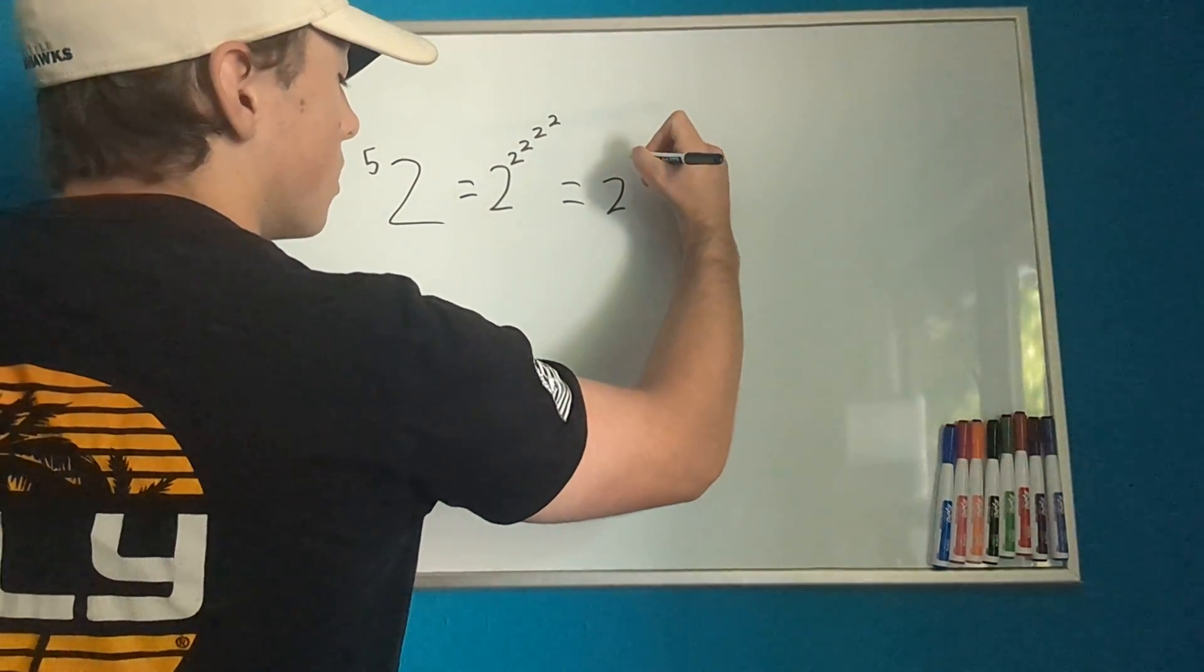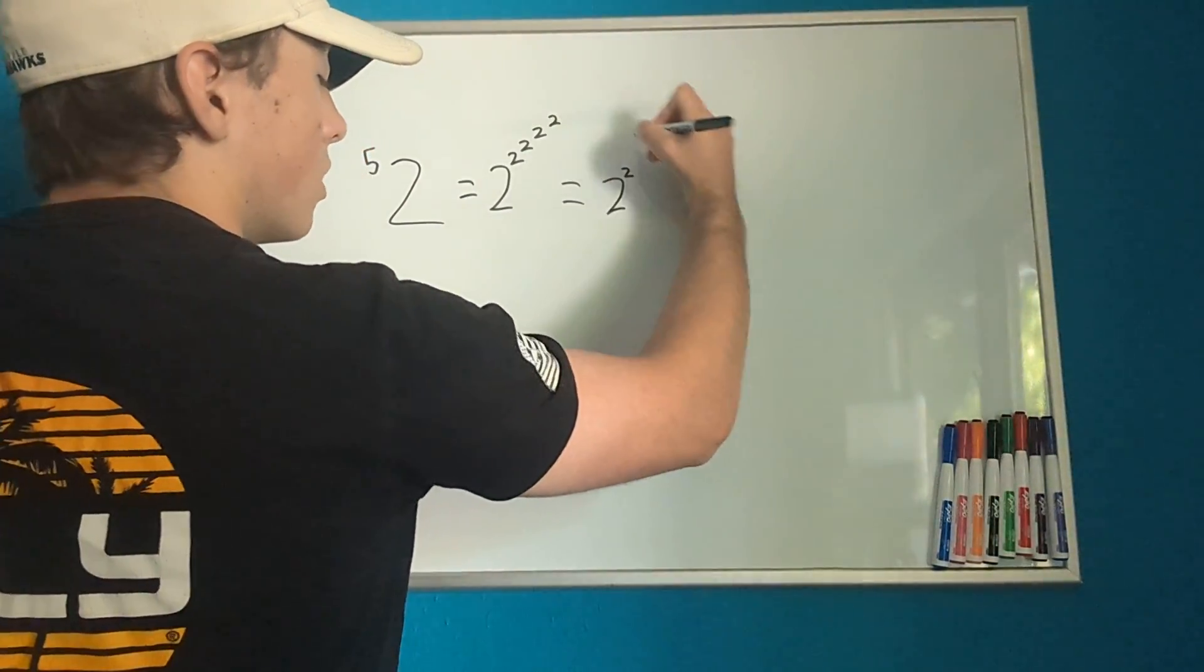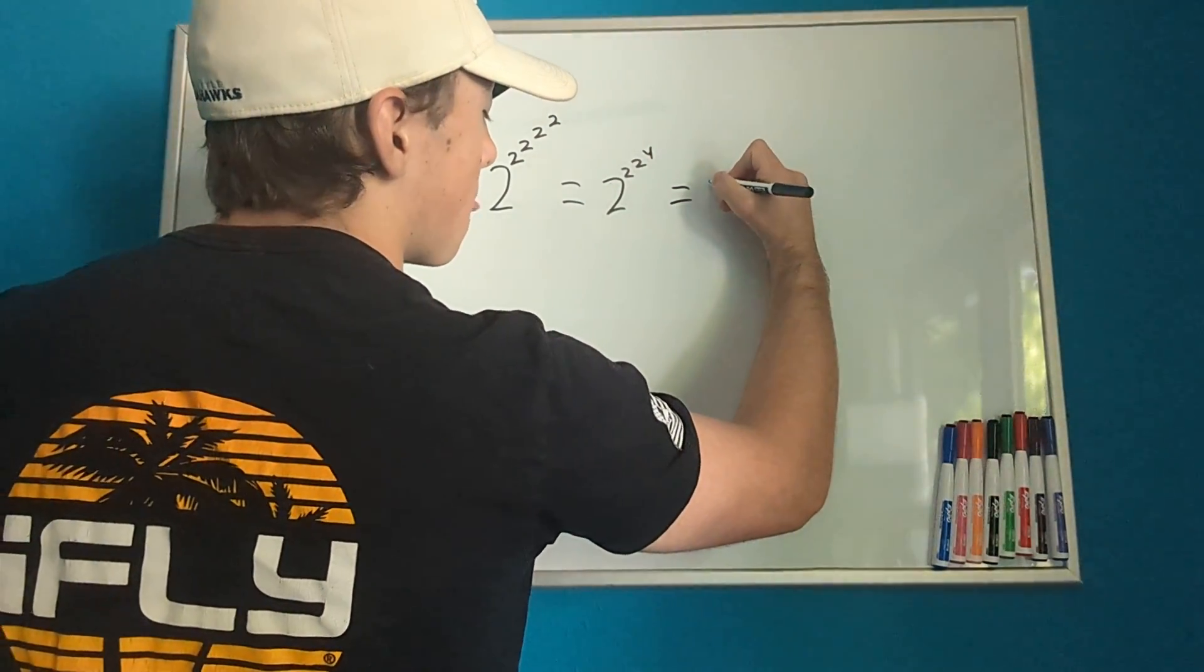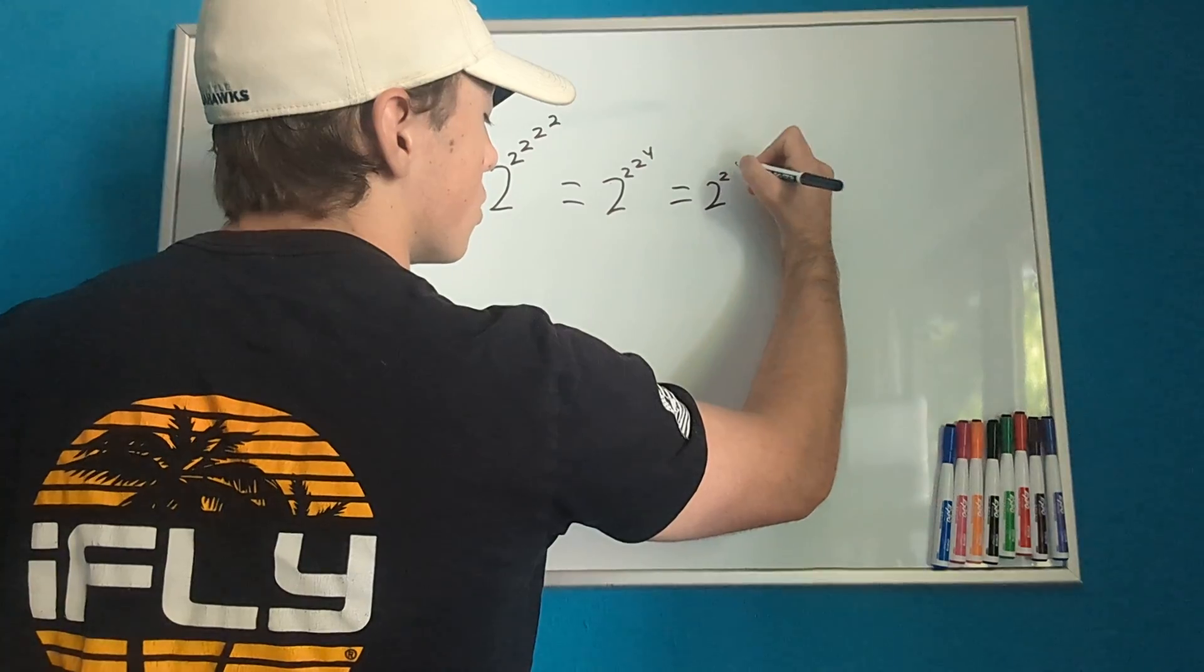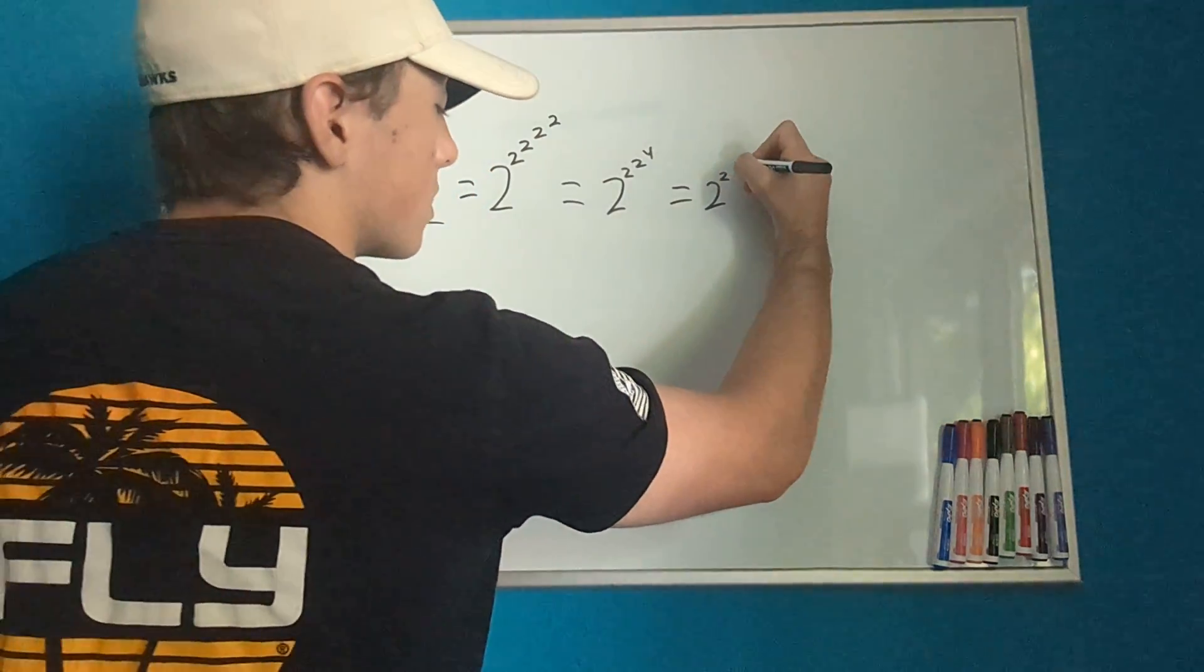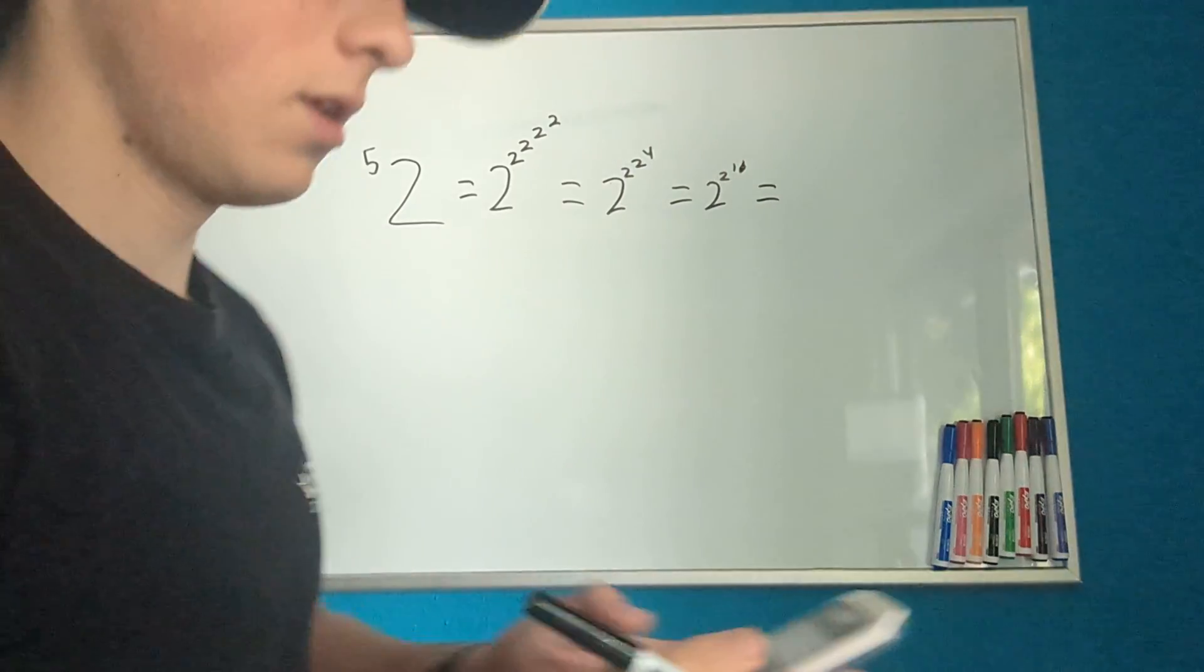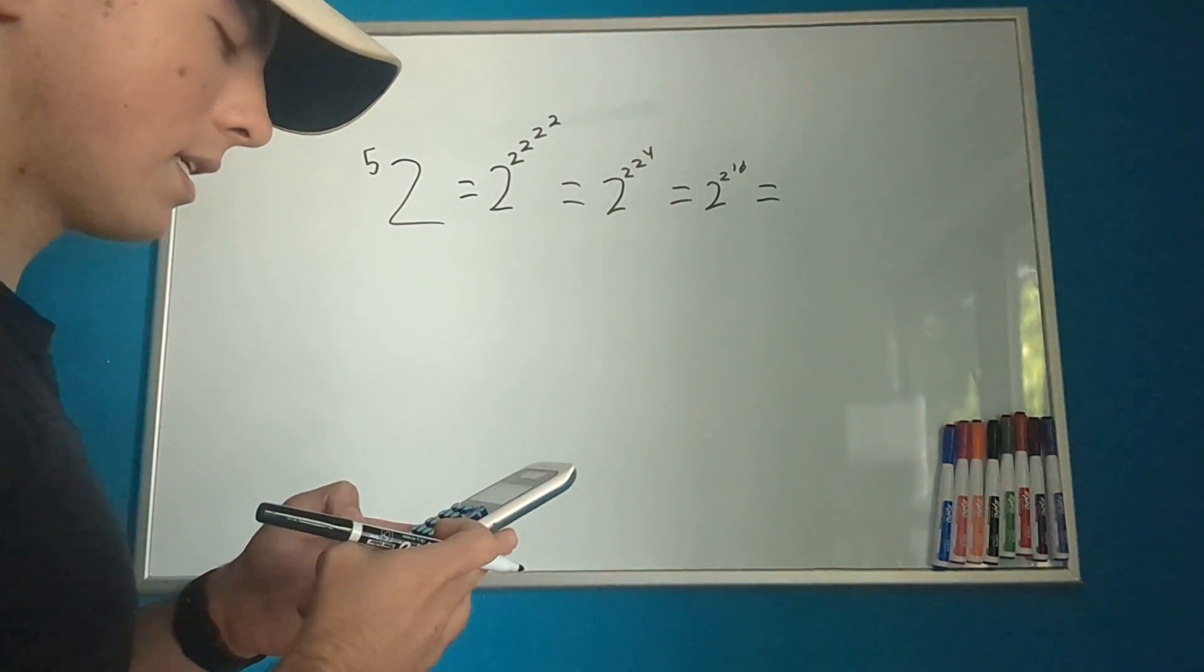So this equals 2 to the, well, 2 to the 2 to the 2 is 4. So then this equals 2 to the 2 to the 4 is 16. So then this equals 2 to the 16.